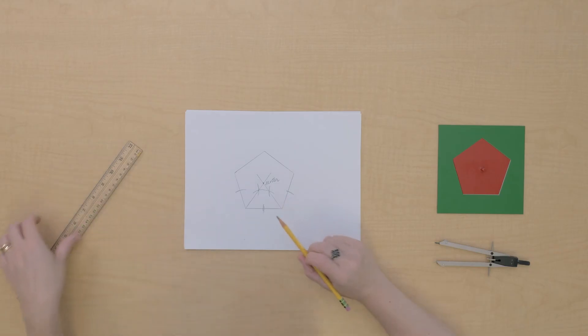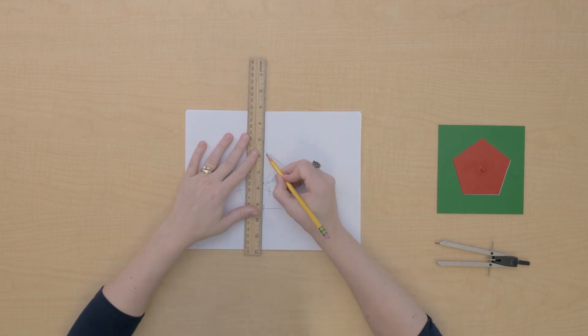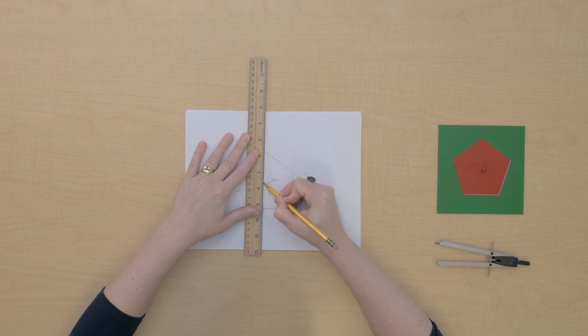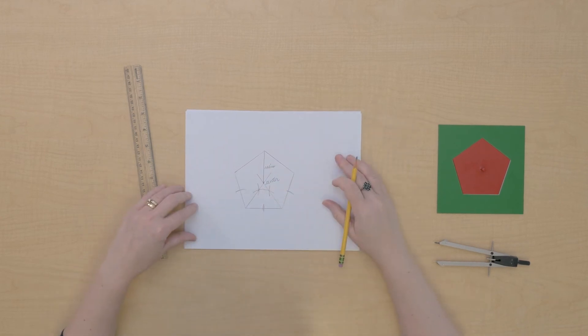All right, there's a few other parts of a regular polygon that we could take a look at. If I have a line segment that has its endpoints on a vertex of the polygon and the other endpoint on the center, this is called the radius, the radius of our pentagon.